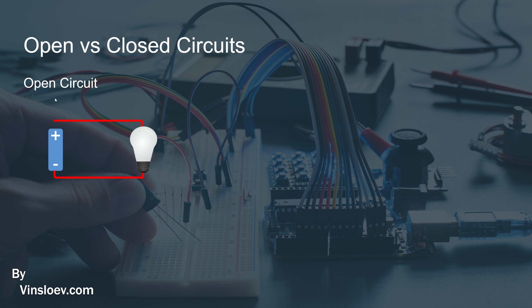Here we see an open circuit. We have a little battery here with a negative terminal and a positive terminal, and then we have a light bulb — and that light bulb is off for now. That is because we have a wire here from the negative terminal to the light bulb, and then another wire that is basically not connecting to anything.